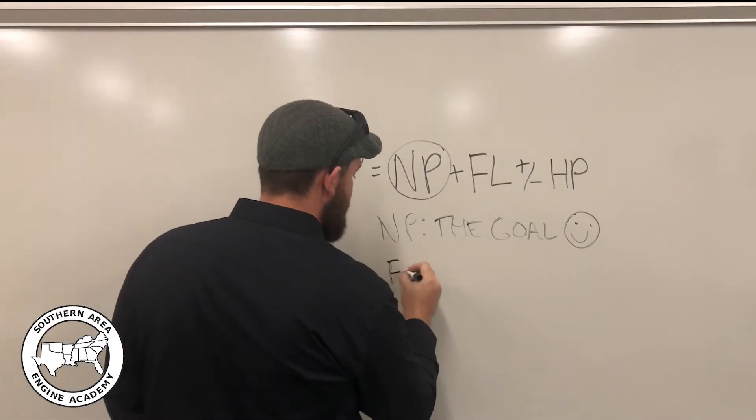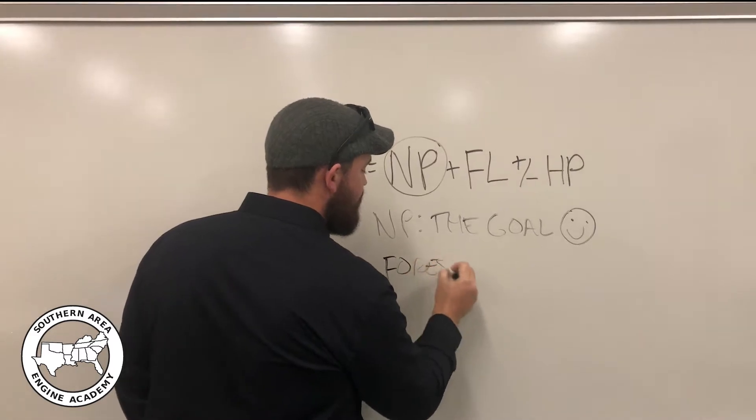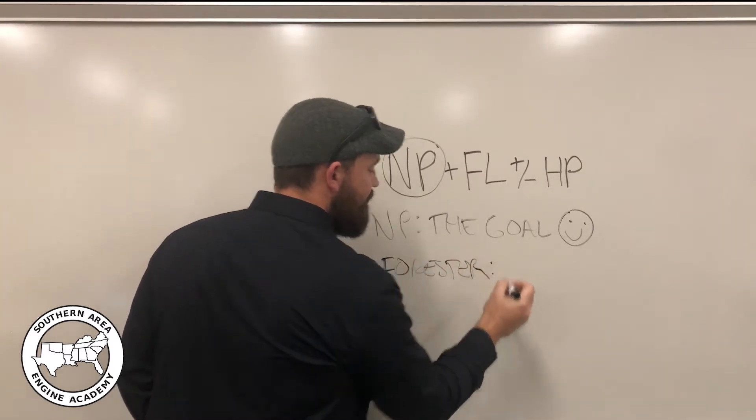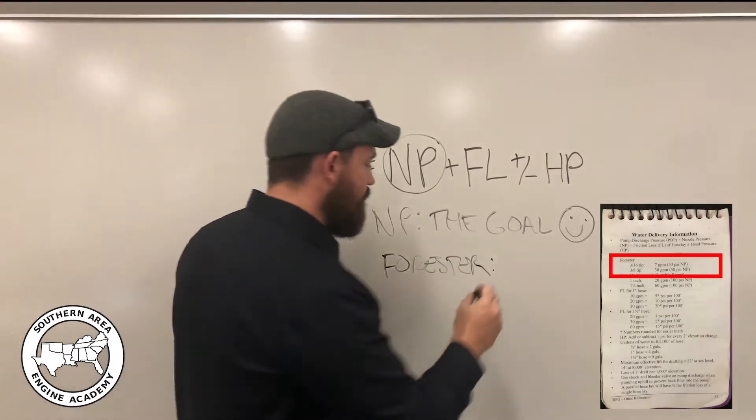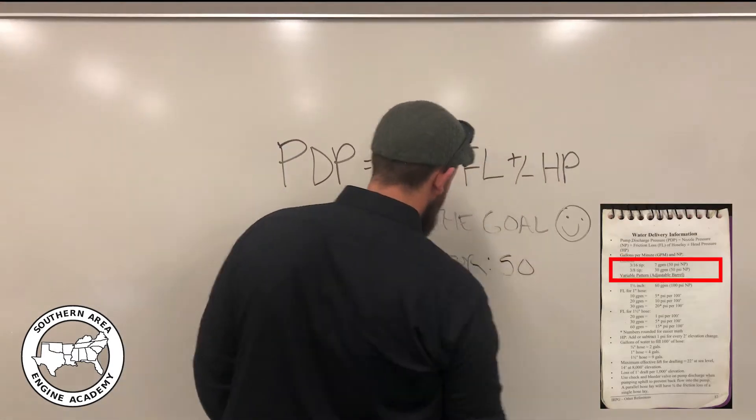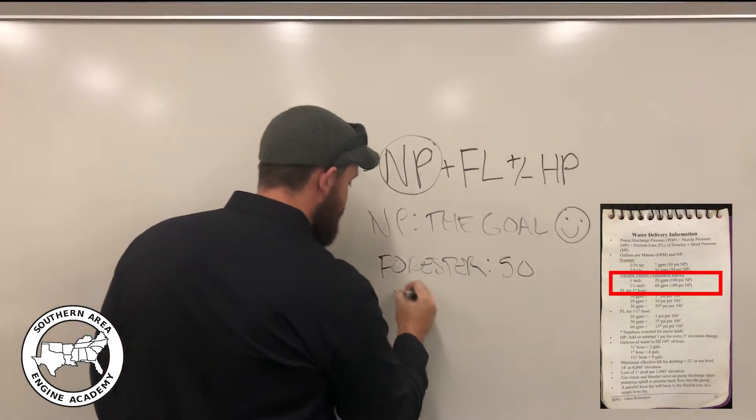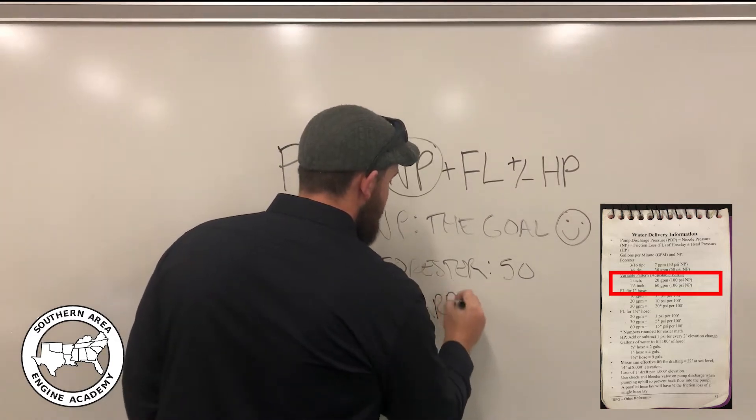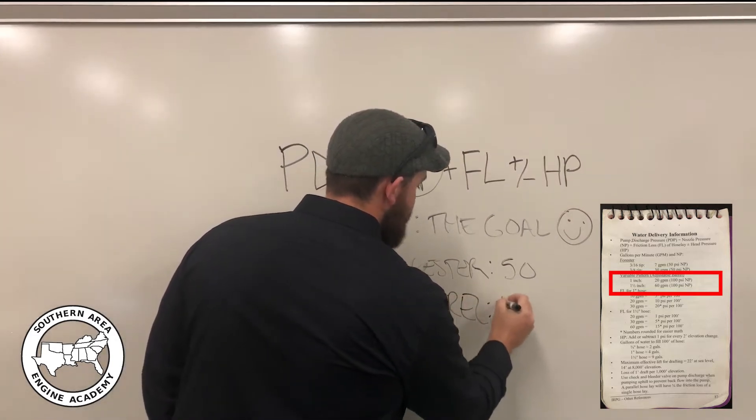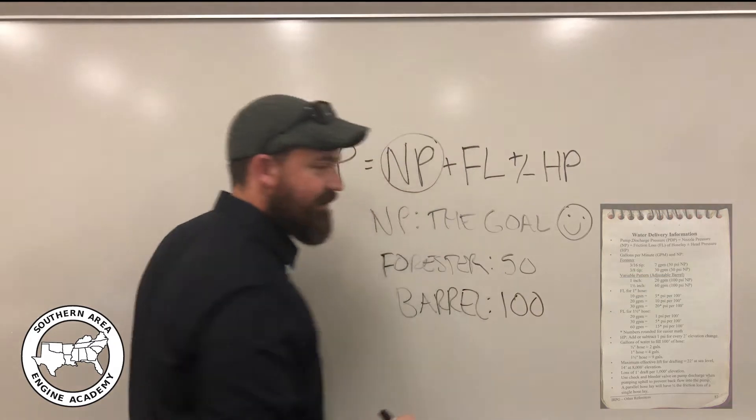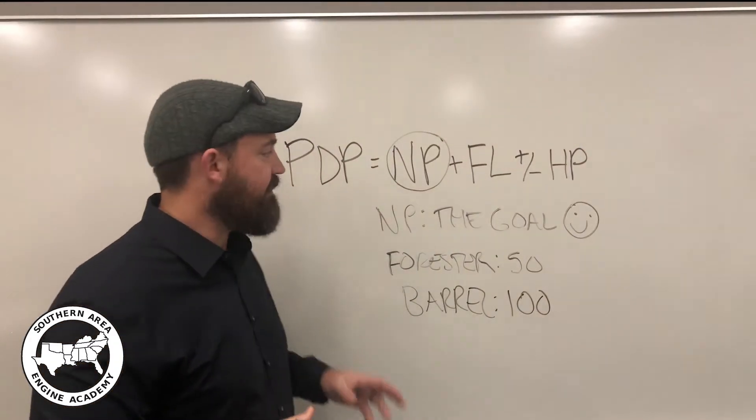So we basically have two different values here. We're going to be running either a Forester nozzle, which operates at a pressure of 50 psi, or an adjustable barrel nozzle, which operates at a pressure of 100 psi. This is really the first gimme in the equation.